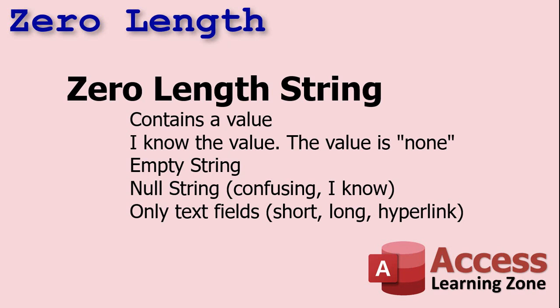A zero length string is different because a zero length string contains a value. You're saying: I know the value, and the value is none. This value does not exist — it's not that I don't know what it is, it doesn't exist. Zero length strings are also called empty strings. I've seen them referred to as 'null string,' which I hate — it's confusing. There's a difference between a null and a null string. I like to use the term zero length string. The term 'empty' also has a separate value in Access, but we won't get into that now.